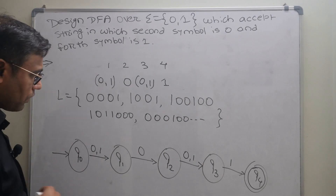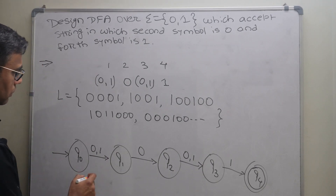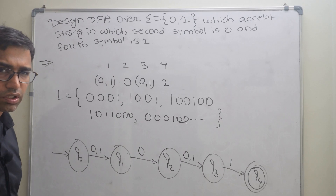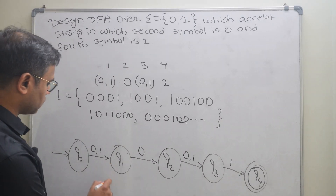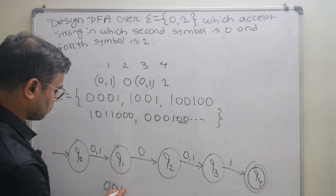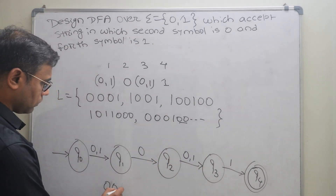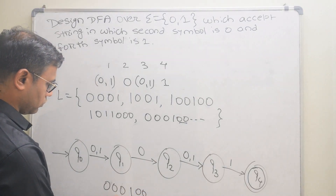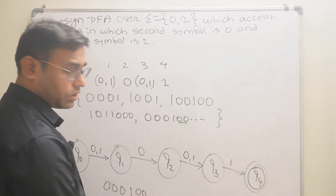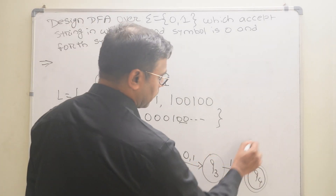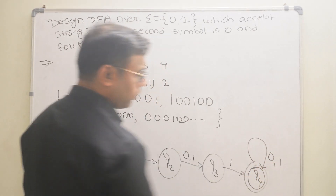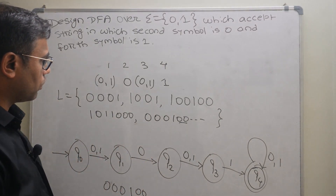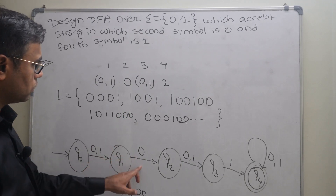The string can start with 1 or 0. If the string starts with 1, for example 100, the string can end with any number of 0s or 1s after the fourth position. So a string like 00001 or 10011001 is valid — there can be any number of 0s and 1s after the required positions. This allows the automata to accept strings of any length where the second symbol is 0 and the fourth symbol is 1.